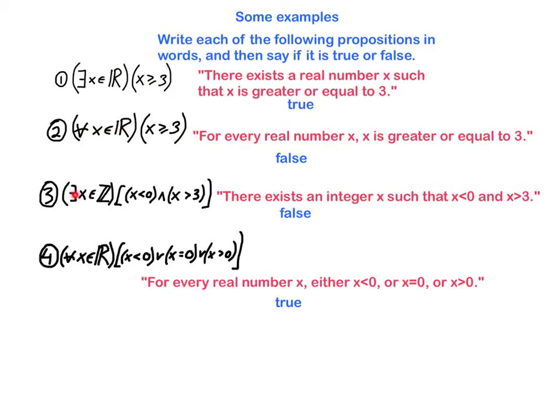This one says there exists an integer x such that x is less than 0 and x is bigger than 3. That's now a proposition, but it's false because it's impossible for there to be a single integer which is simultaneously less than 0 and bigger than 3. It would be true if we replace this conjunction with a disjunction, with an or statement, with an or connective. So be very careful about your use of the connectives and make sure that you use them accurately. It makes a very big difference.